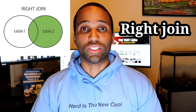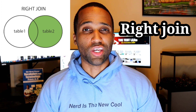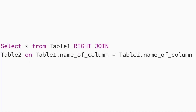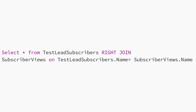Now the SQL right join, which is the opposite of the left join. In the left join we return all the values from table one and the matching ones from table two. Now we're going to return all the values from table two, then the matching ones from table one. In theory, you can just switch all of the tables and always use the left join, but this is the right join. The command looks like this: select star from table one right join table two on table one dot name of column equals table two dot name of column. Example: select star from test lead subscribers right join subscriber views on test lead subscribers dot name equals subscriber views dot name. This command will retrieve all the data records from the right table, subscriber views, and the matching records from the left table, test lead subscribers.